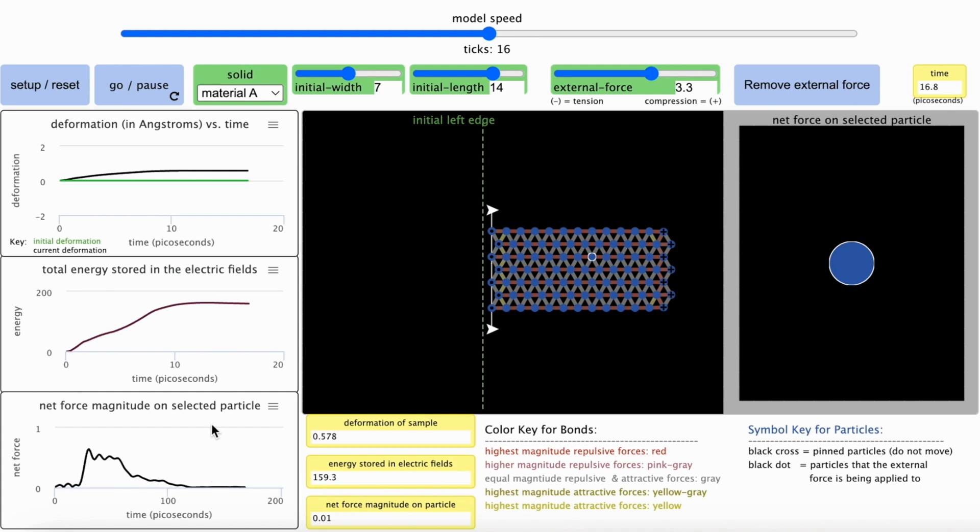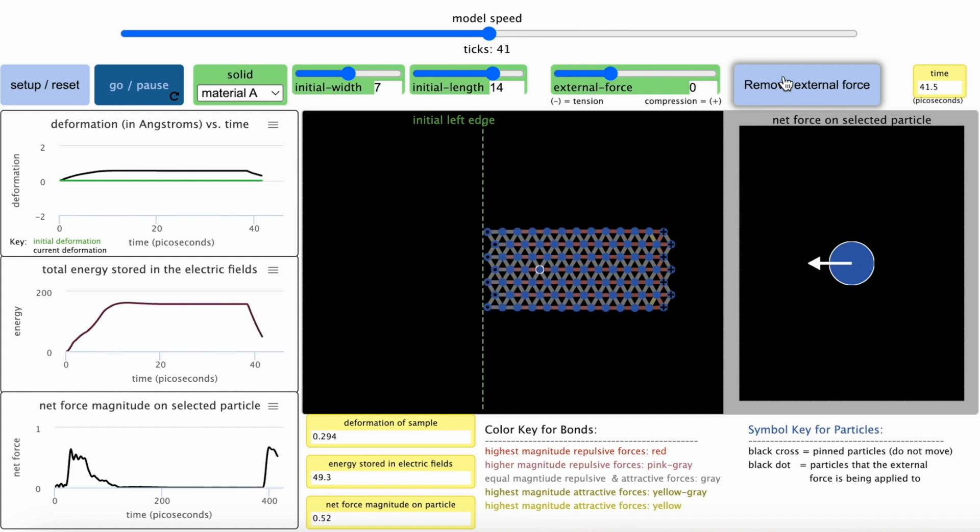The bottom graph provides you a measure of the magnitude of the net force on the selected particle in the solid. The selected particle has a white outline. You can use your mouse to click on a new particle to select to measure the net force on when the model is running and not paused. This right panel shows you a vector representation of the net force from the neighboring bonds on the selected particle. We see no net force vector on it right now because the net force on it is zero. Watch that again when you remove or add external forces to the solid and resume the model.